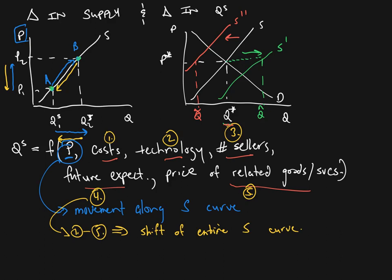Whereas a change in anything other than price — a change in cost, technology, number of sellers, expectations, or related goods, that is the determinants of supply — is going to cause actual shifts of the supply curve. So I hope this video helped. Making it successfully through principles of economics is much, much easier if you understand this. Of course, if you have any questions, don't hesitate to contact me. Thank you for watching.